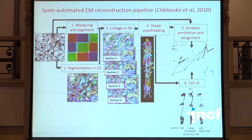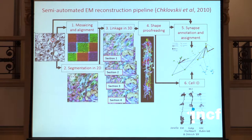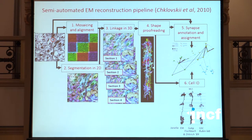At Janelia, I initiated and ran a project to automate this reconstruction by going through those steps while reducing the amount of manual labor as much as possible. We did not succeed in completely eliminating manual labor — we still have a manual proofreading stage — but we were able to reduce the amount of work by an order of magnitude, and with the arrival of a new microscope, by two orders of magnitude. That allowed us to reconstruct the connectome relevant for motion detection in the fly.